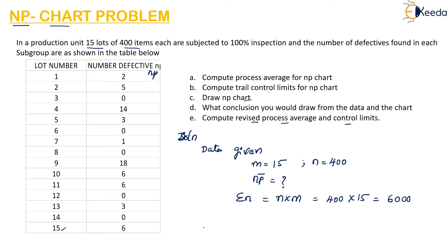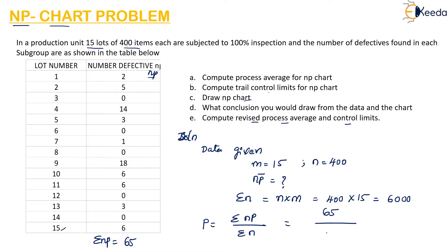We know that P̄ = sigma(NP) / sigma(n). We already know sigma(n), so we need to calculate sigma(NP). The NP values given are added up: 5 + 14 + 3 + 1 + 18 + 6 + 6 + 3 + 6, and summing all values gives sigma(NP) = 65.